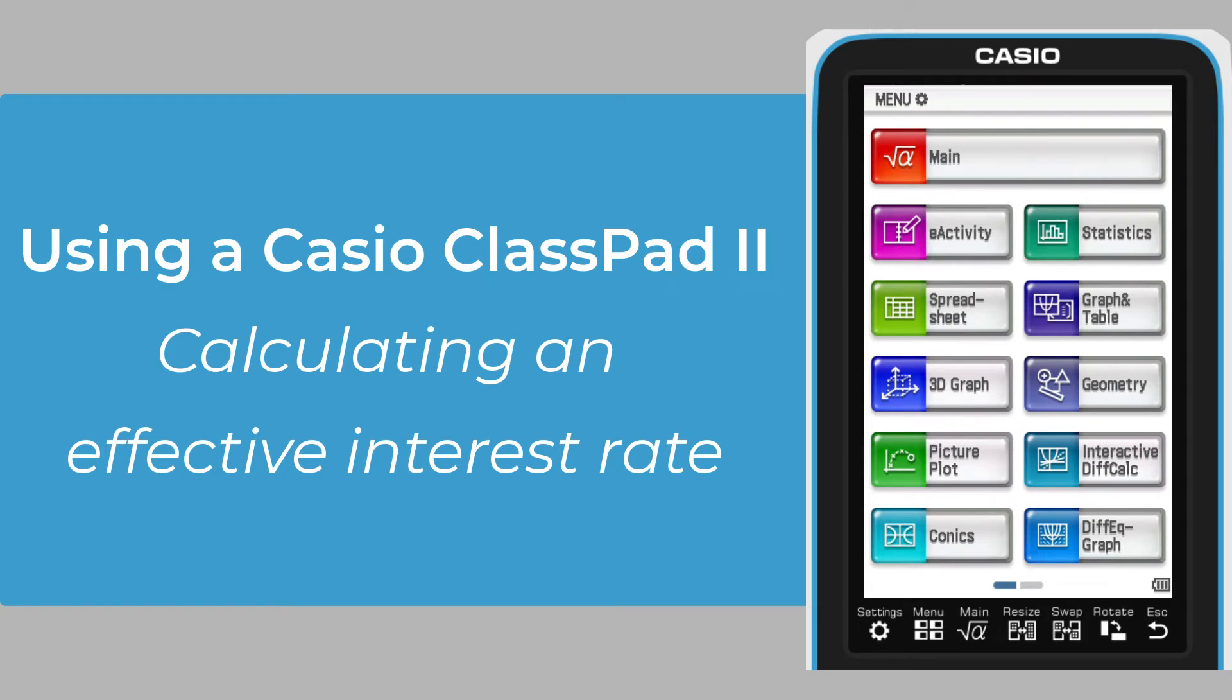This video will demonstrate the calculation of an effective interest rate associated with a nominal compound interest value using a Casio ClassPad 2. This sort of calculation features in senior mathematics courses like VCE Further Mathematics and WACE Mathematics Applications, which require answers to questions like this one.